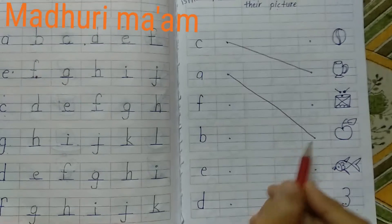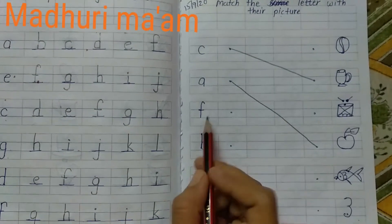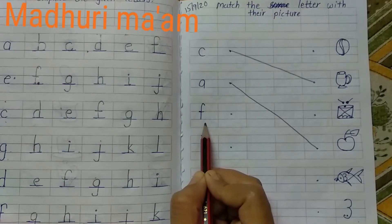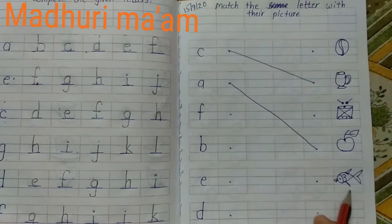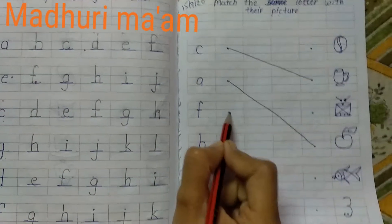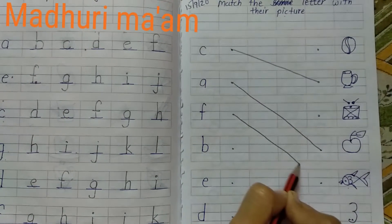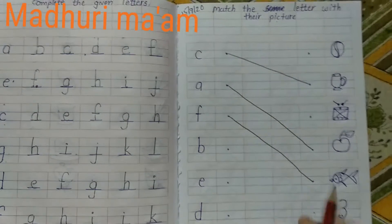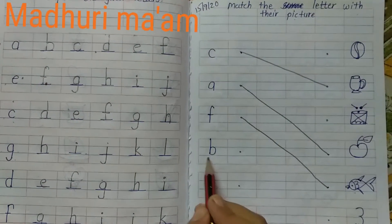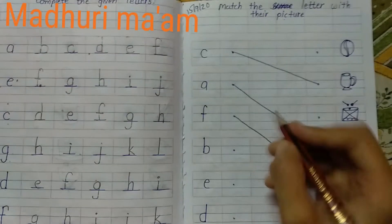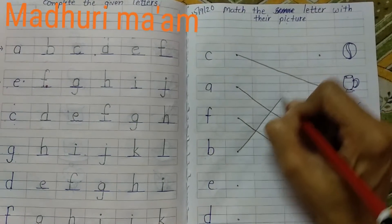Then the next letter — which letter is this? This is small F. F for fish, so match with it. Then next letter — which letter is this? This is B. So B for ball.